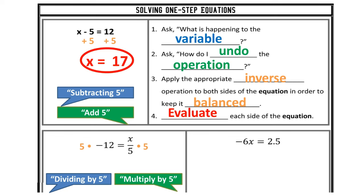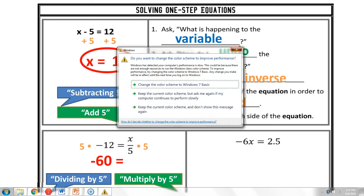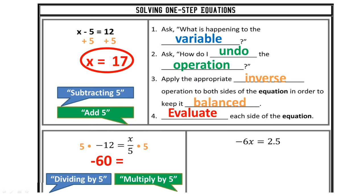If I take x divided by 5 and multiply that by 5, I'm going to get 1x. That's my identity, 1. So I'll leave x on the right side, and on the left side, 5 times negative 12 gives us negative 60. So my equation is solved because my variable is all by itself, or it has a coefficient of 1. On your own, try the next problem: negative 6x equals 2.5.